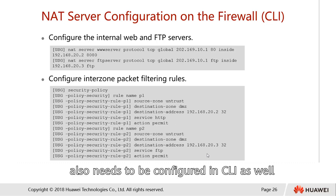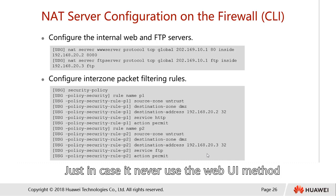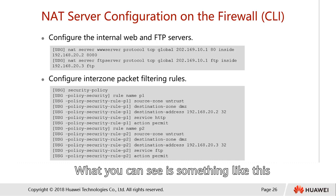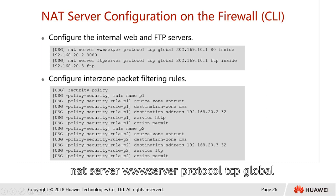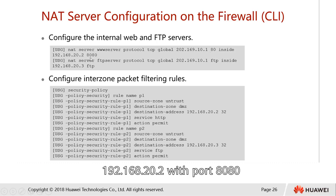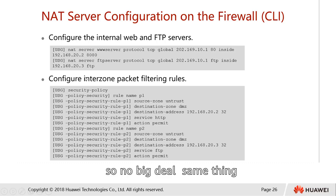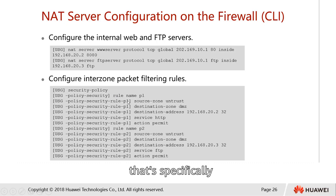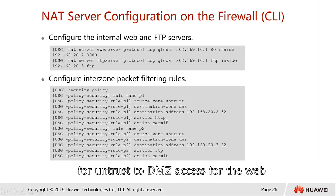The NAT server also needs to be configured in CLI if not using the web UI. The command is something like: NAT server, WW server, protocol TCP, global public address, and the port representing our internal server at 192.168.20.2 with port 8080. Same applies for the FTP server. Then the security policy has rule names specifically designed for different purposes — for example, one rule for untrust to DMZ web access, and a second rule for FTP.